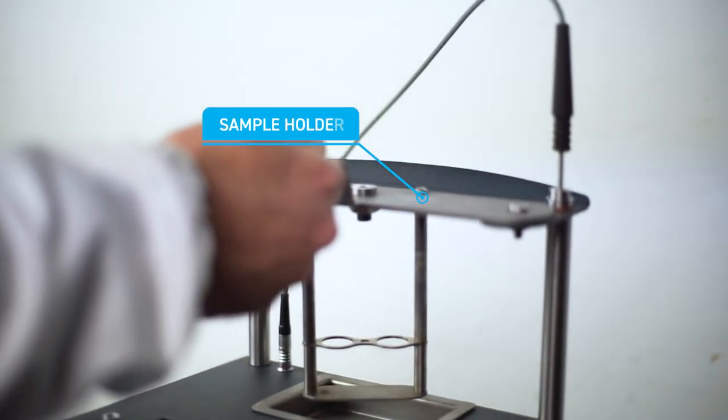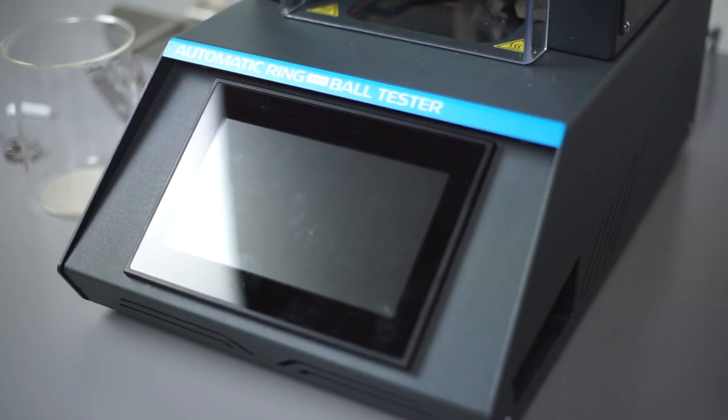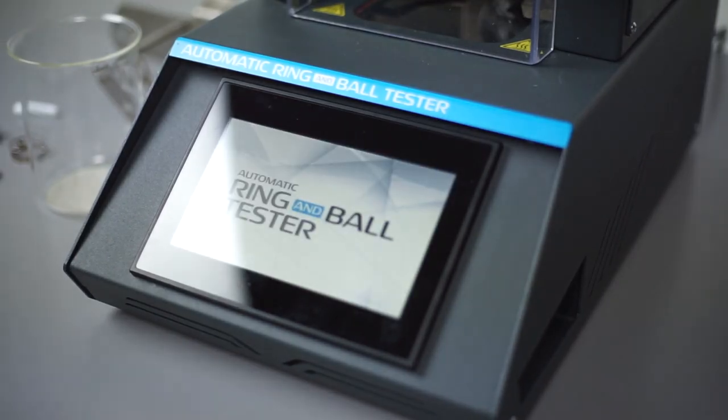To perform a test, switch on the automatic ring and ball apparatus. The main menu will be shown on the screen.